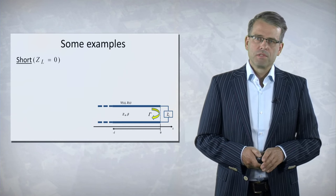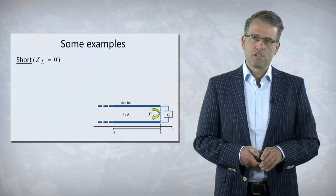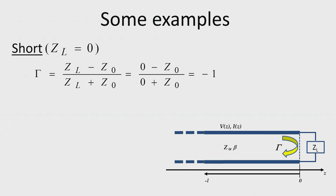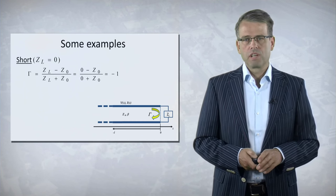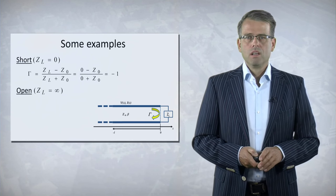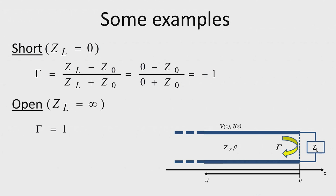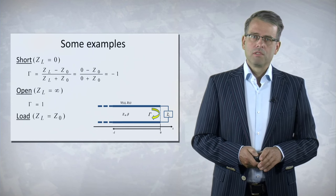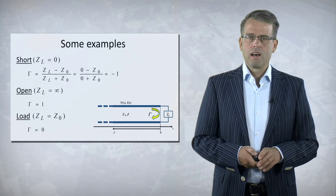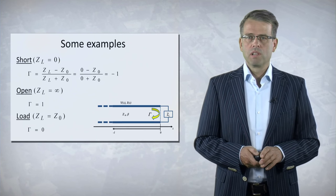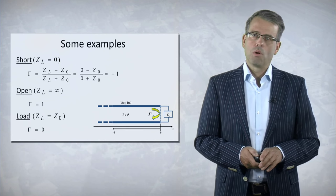Some examples. For example, a short. That means that Z_L is 0. If we substitute that in our equation for gamma, then we find that the reflection coefficient is minus 1. So everything is reflected with a phase of 180 degrees. We can also use an open, then Z_L is infinite, and we find that gamma is 1. So also everything is reflected, but then with phase 0. If we terminate it with a matched load, then we have a reflection coefficient of 0. And this is often seen as the most optimal situation.